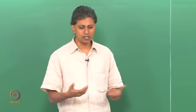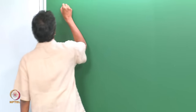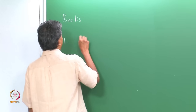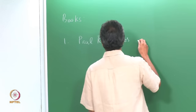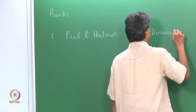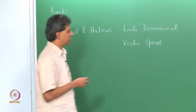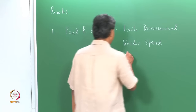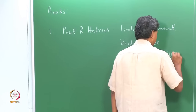Before that, perhaps I should mention two books, both classics in a sense. The first one is Halmos' book, Finite Dimensional Vector Spaces, by Paul Halmos. The latest edition has appeared in Springer in 2011, in the undergraduate text in mathematics, the so-called UTM series.